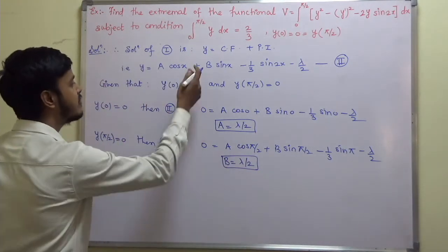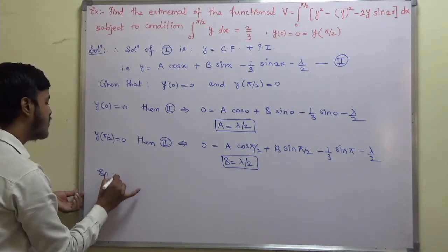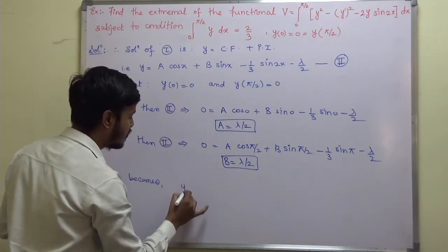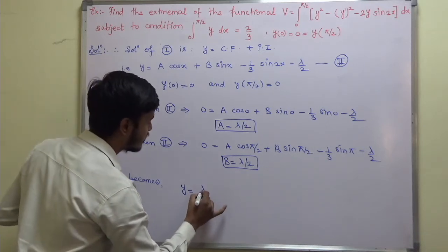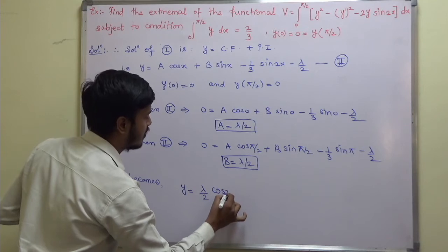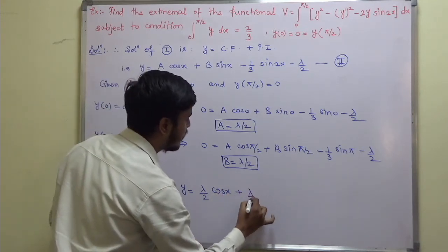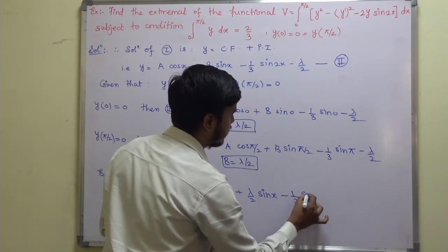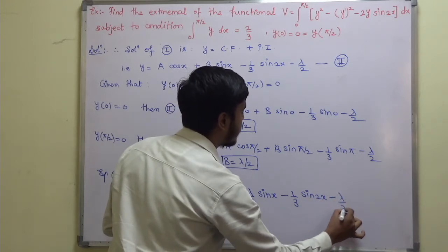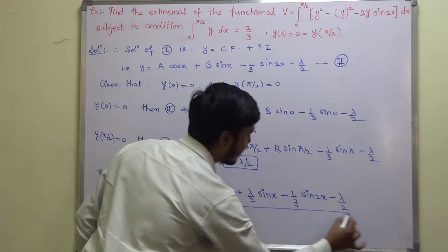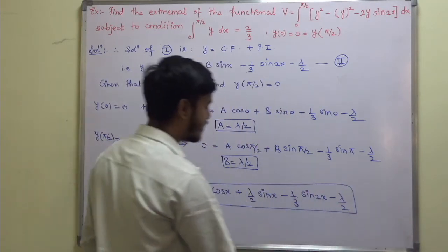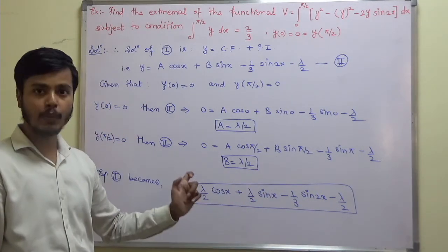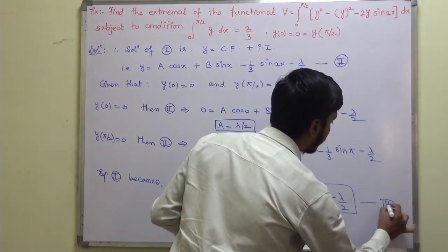Substituting a = λ/2 and b = λ/2 back into equation 2, it becomes: y equals (λ/2)cos x + (λ/2)sin x − (1/3)sin(2x) − λ/2. Call this equation 3. Now we need to find the value of λ using the isoperimetric constraint.